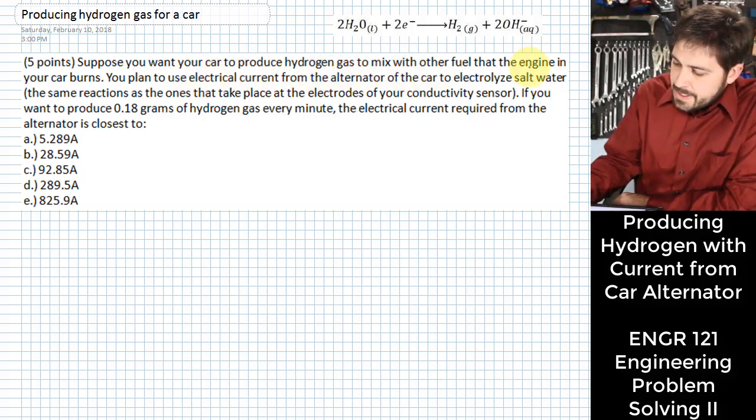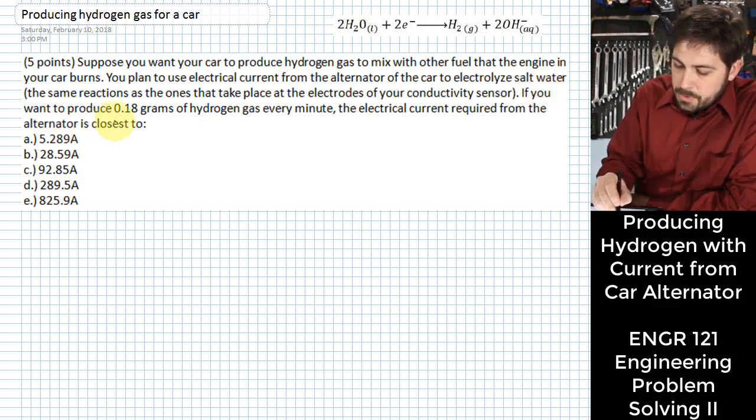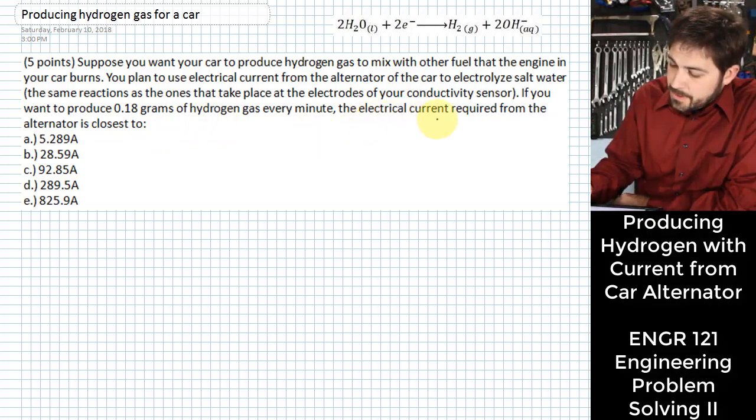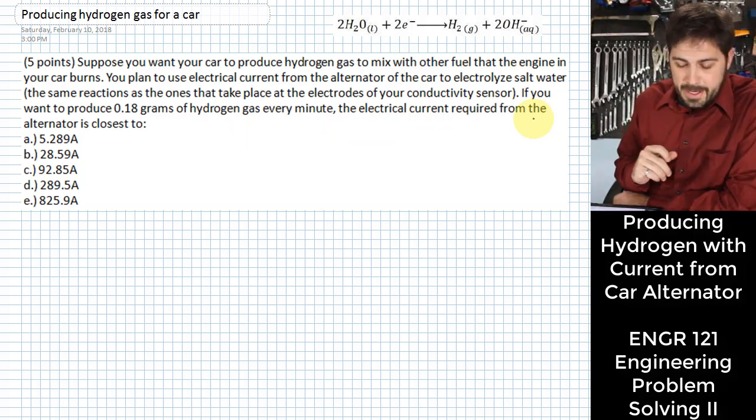We want your car to produce hydrogen gas. You're trying to produce it using the electrical current from the alternator, and you're going to produce 0.18 grams of hydrogen per minute. And we need to figure out the electrical current required from the alternator to be able to do that.